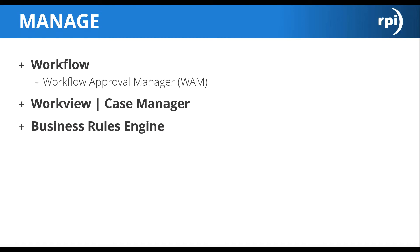The workflow approval management can be used within OnBase workflow — it is an option. It will accelerate document approval processing by allowing business users to configure rules to evaluate documents and dynamically assign approvers. Ad-hoc approval assignments can also be made at runtime, and approvers can delegate their own assignments when they are unavailable or out of the office. Additionally, approval hierarchies from existing business systems can be leveraged within workflow approval management to automatically manage assignments without any custom development.